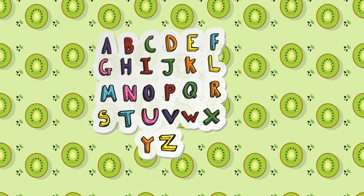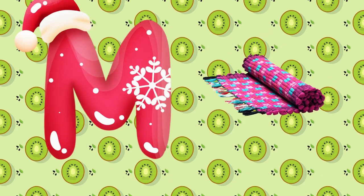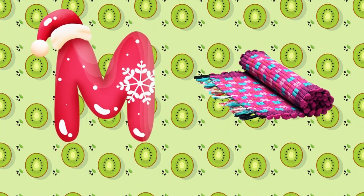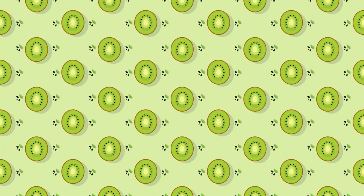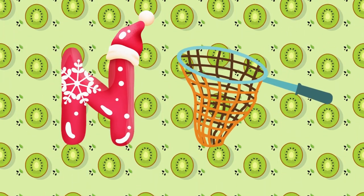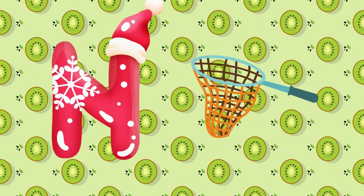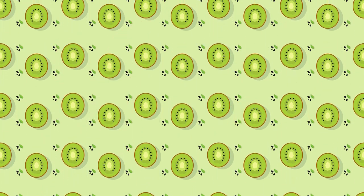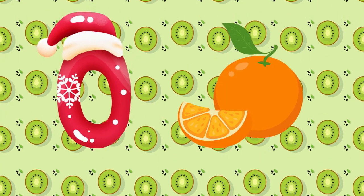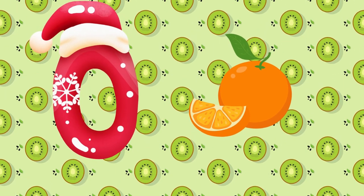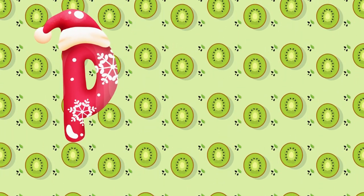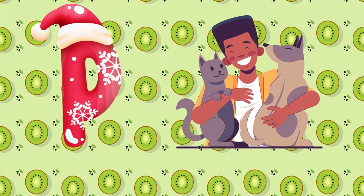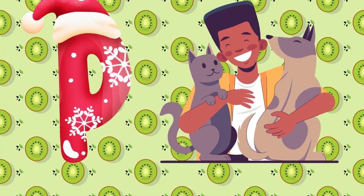M is for mat, m-m-mat. N is for net, n-n-net. O is for orange, o-o-orange. P is for pet, p-p-pet.